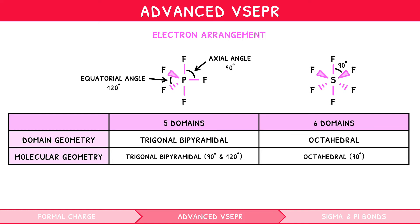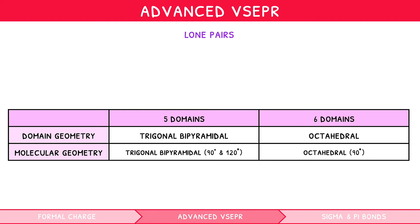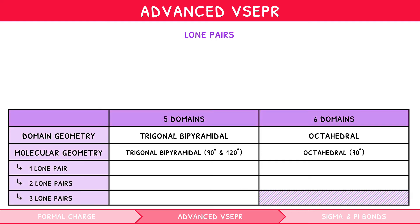Just like with the other domain geometries introduced, you must know the final molecular geometry, based on the number of lone pairs. So, for these structures, we can expand our table again. If the electron geometry is trigonal bipyramidal with one lone pair, the resulting shape is known as seesaw, for example, SF4.